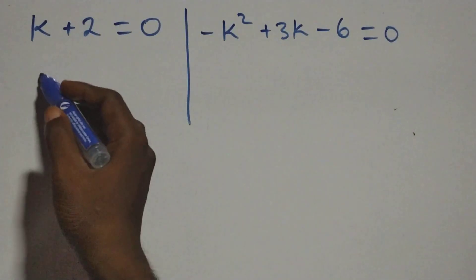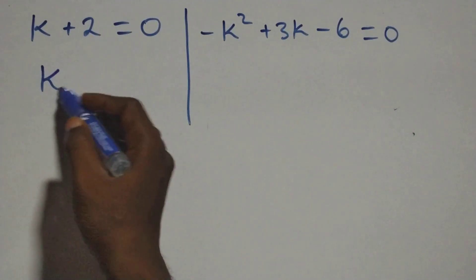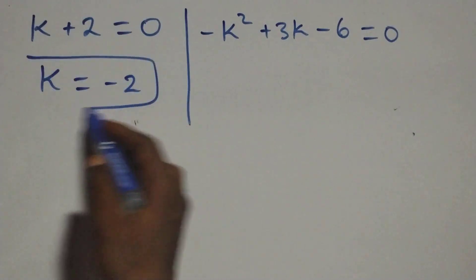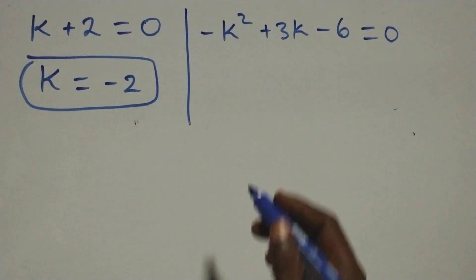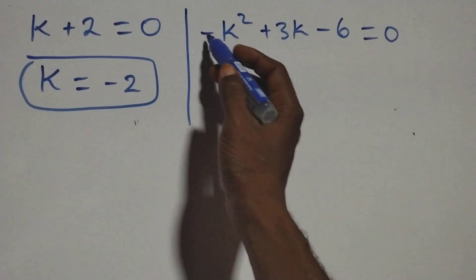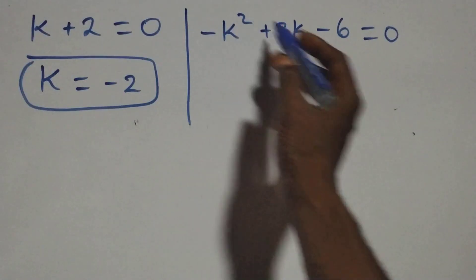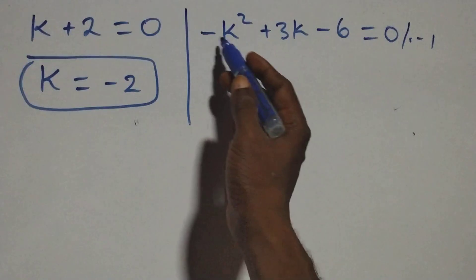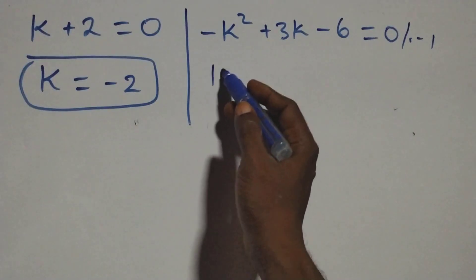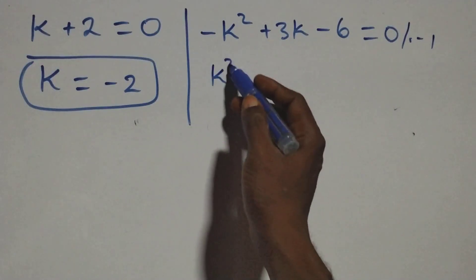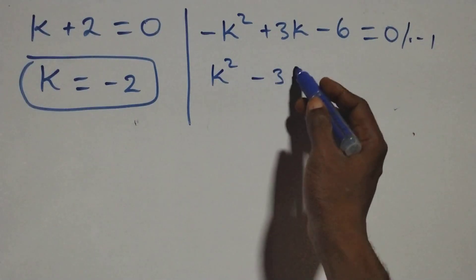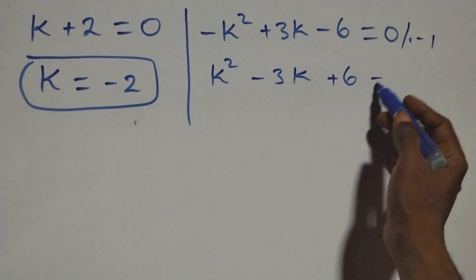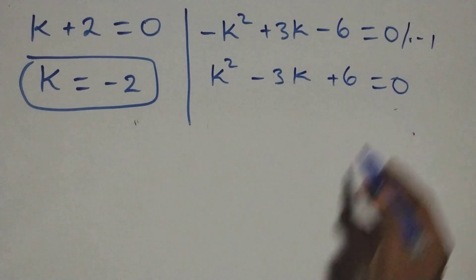Solving the first case: k equals minus 2, which is a real solution. Then for the second equation, we multiply through by minus 1 to remove the negative sign, and this becomes plus k squared minus 3k plus 6 equals zero.